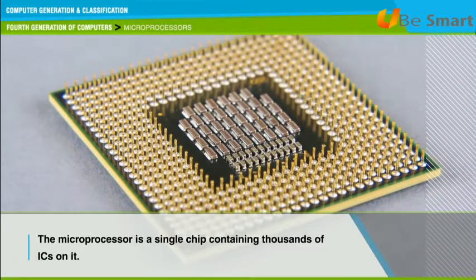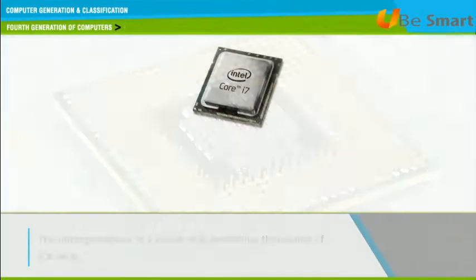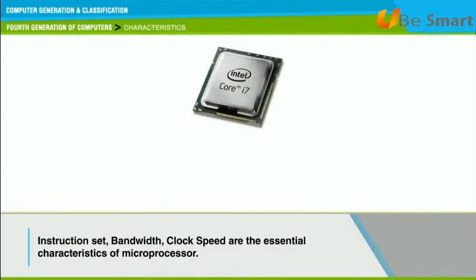Microprocessors differ from integrated circuits. The three essential characteristics that differentiate microprocessors from integrated circuits are instruction set, bandwidth, and clock speed.